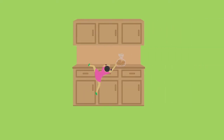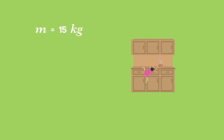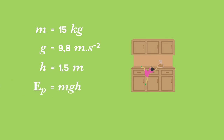A child of mass 15 kilograms climbs up 1.5 meters onto a cupboard. How much potential energy has she gained? Mass m = 15 kg, acceleration due to gravity g = 9.8 m/s², and change in height h = 1.5 meters. Using EP = mgh and substituting the values, we calculate the answer as 220.5 joules.